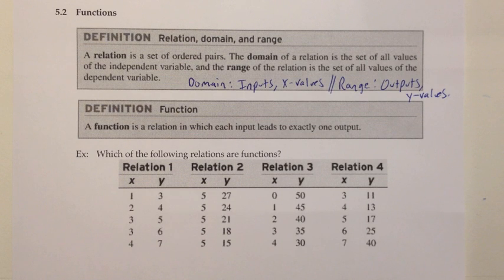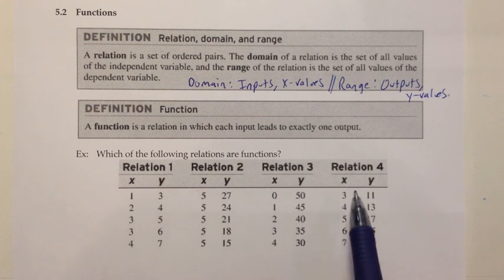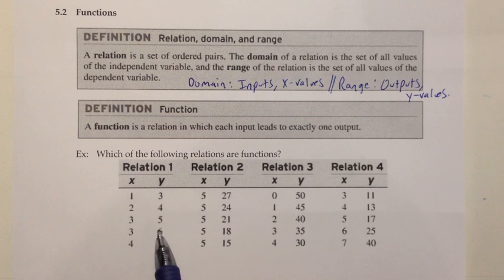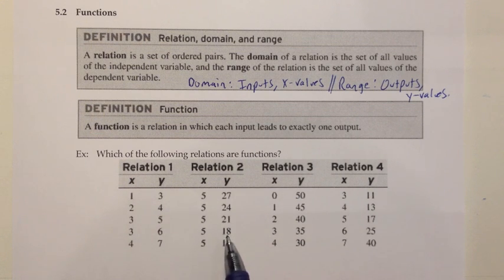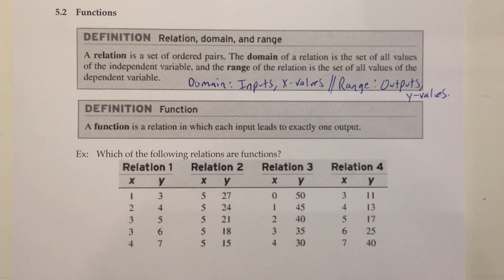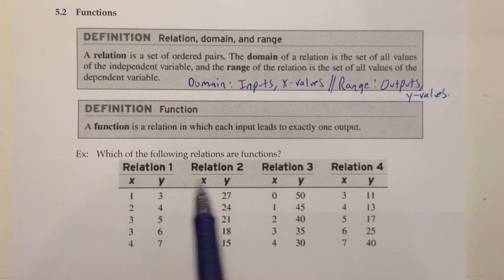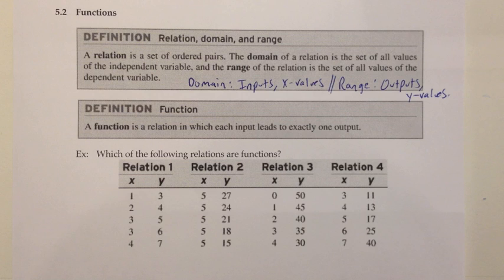There are four different relations shown here — relation 1, 2, 3, and 4. They're all relations because they're sets of ordered pairs, and we want to know which of these are functions. Let me show you the ones that violate the rule of a function, and hopefully that will help you understand this definition.